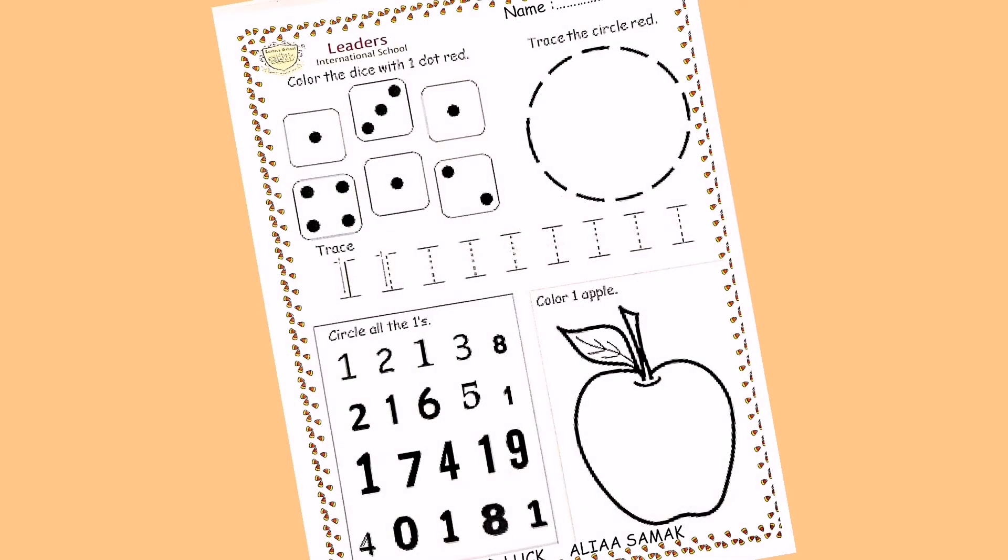To enhance your ability in writing and identifying number one, you have to answer this worksheet. What you're going to do in the worksheet is: first, you have to color the dice with one dot red. Then, trace the circle red. Then, you have to trace number one.